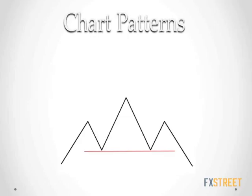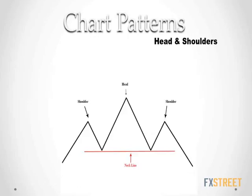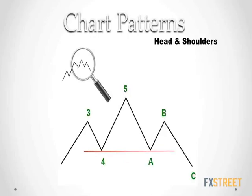Now let's move to the chart patterns. Anyone can identify this pattern? That's a head and shoulders pattern. It consists of a left shoulder, a head, and a right shoulder. The neckline is represented by a red line, and that is important for calculating a target after the completion of the pattern. This is how a head and shoulders pattern looks from an Elliott Wave perspective: the top of Wave 3 for the left shoulder, Wave 5 for the head, and Wave B for the right shoulder.